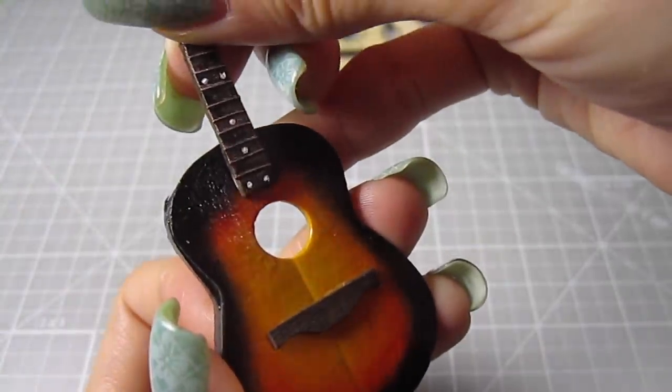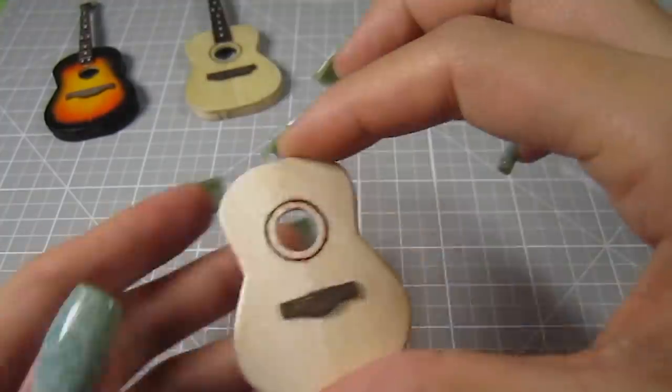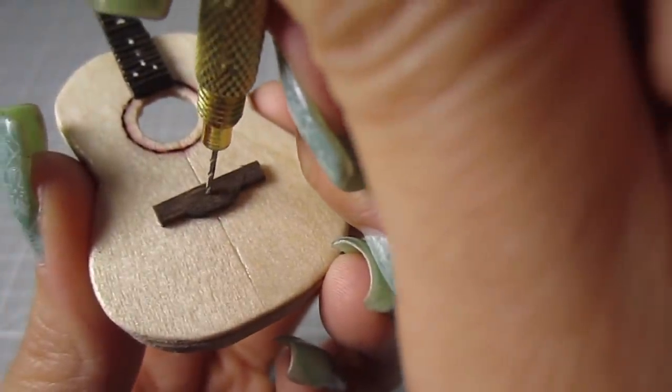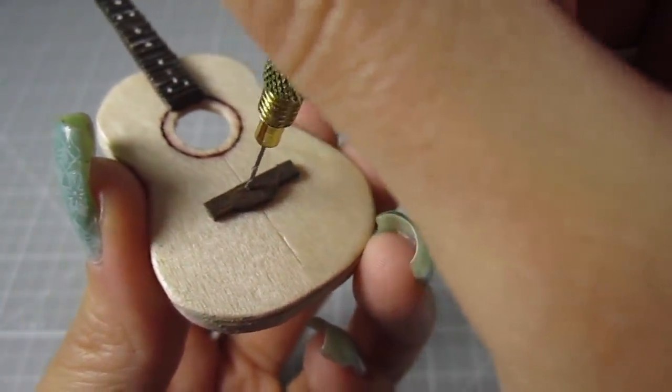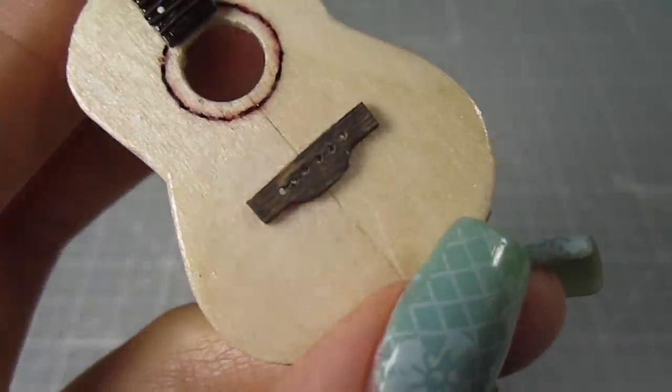Okay, back to our project. Glue on the bridge about half an inch under the sound hole with some wood glue. While that's drying, let's glue on the neck as well. Also just using some wood glue here. Next, I used that mini hand drill again to drill six holes into the bridge. It's just a simple row of six holes that go right through the wood. We'll be threading our strings through these holes.